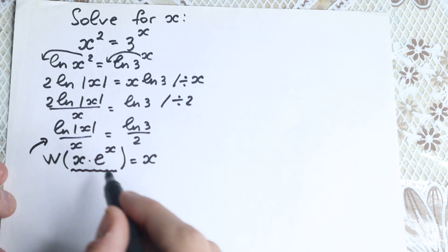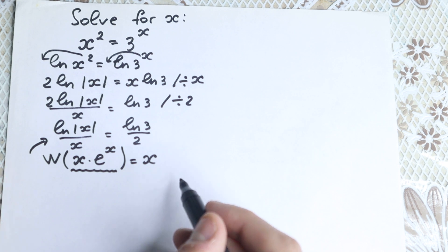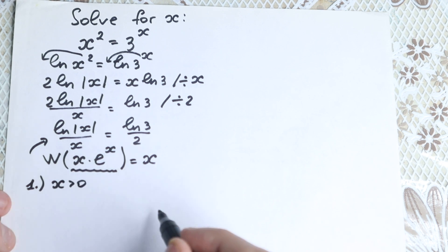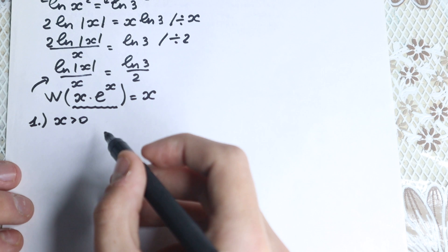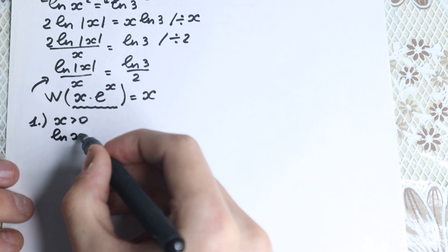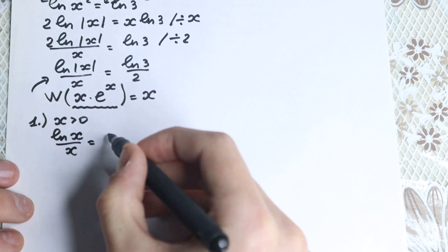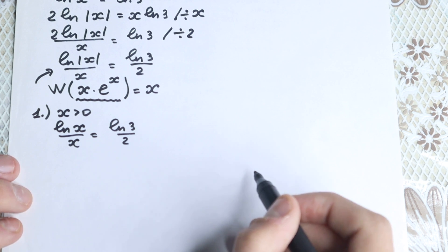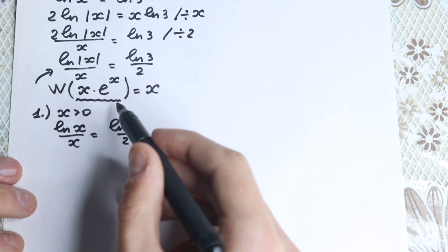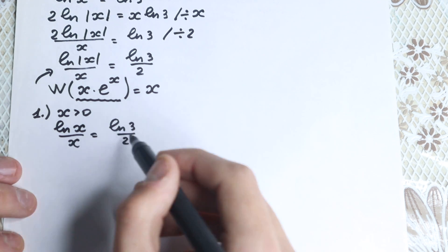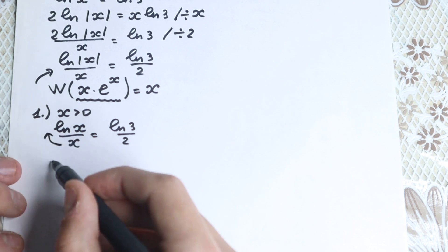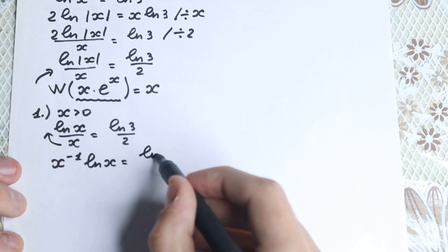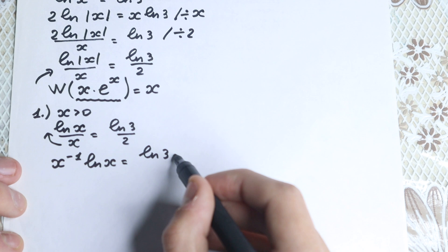Let's look at our expression. We have natural log of |x|, which tells us we have two cases. The first case is when x is positive, where we drop the absolute value. So we have: natural log x over x equals natural log 3 over 2. We need to create a Lambert W function situation here. Let's bring the x to the numerator: x to the power minus 1 times natural log x equals natural log 3 times one half.